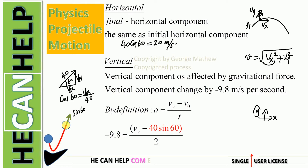Similarly, sine 60 equals v0y over 40, so v0y equals 40 sine 60. We now have both the initial vertical and horizontal components of the velocity vector. To find the vertical component after two seconds, go back to the definition of acceleration: acceleration equals change in vertical velocity divided by time. Final vertical velocity is unknown; initial vertical velocity is 40 sine 60; time is 2 seconds; acceleration is negative 9.8.